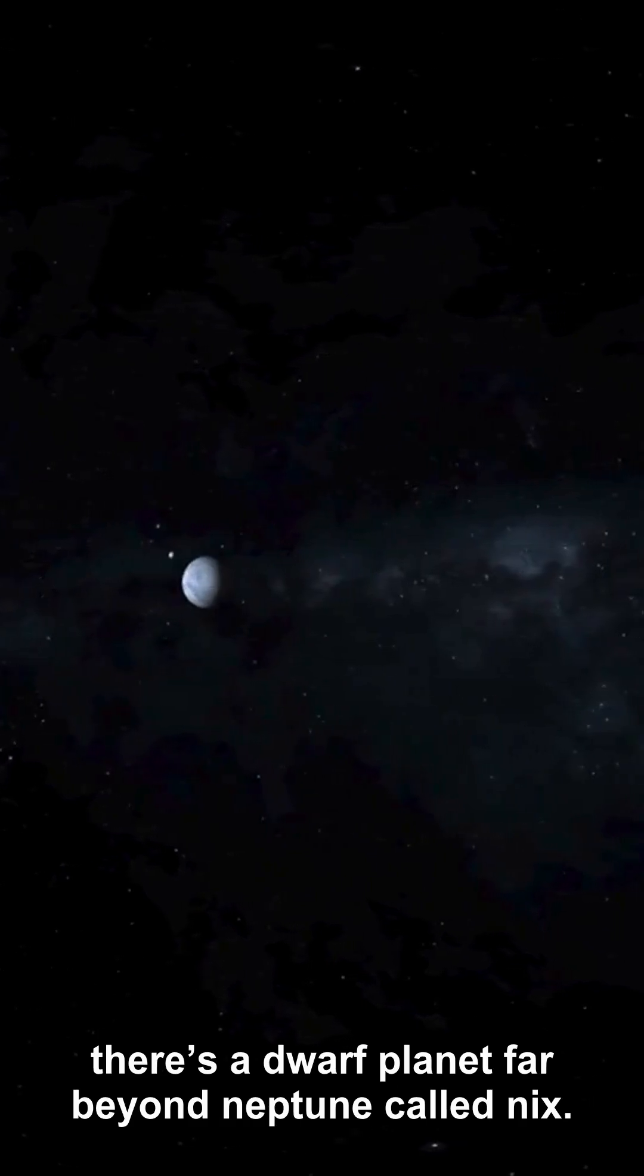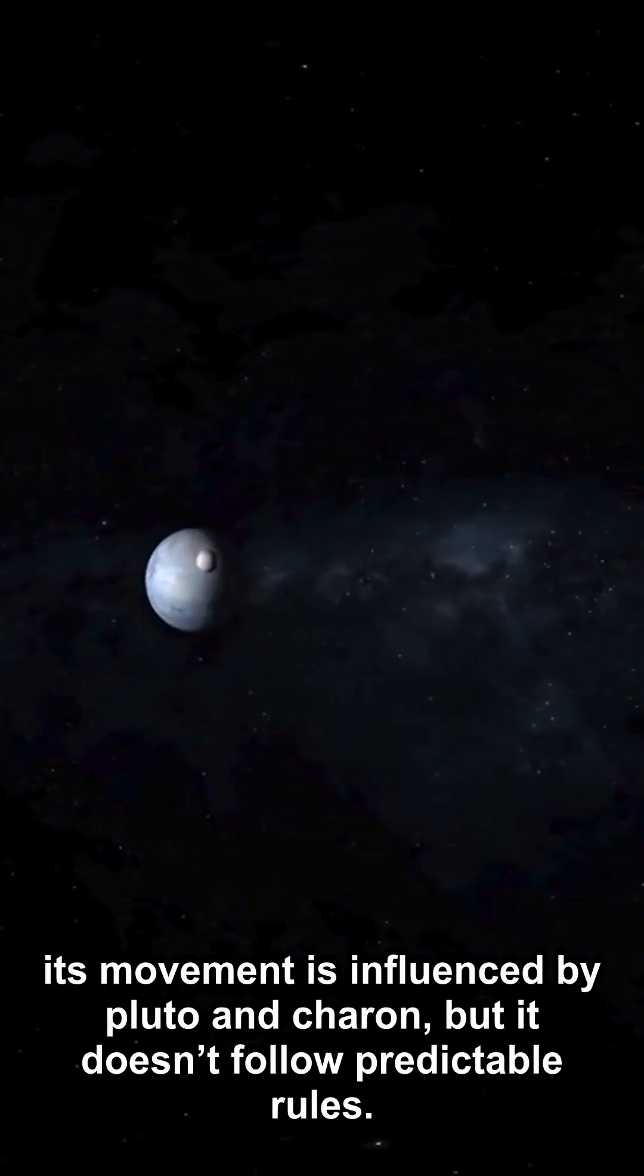There's a dwarf planet far beyond Neptune called Nix. Its orbit is chaotic, literally.